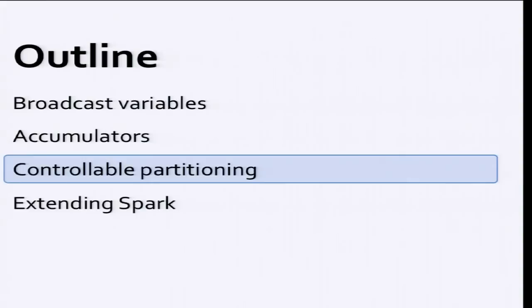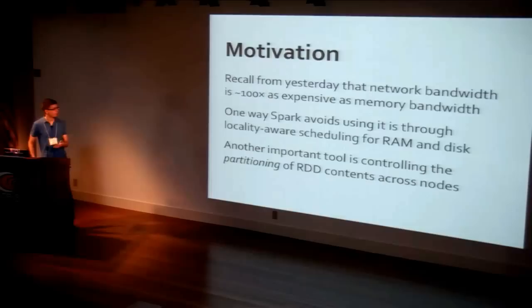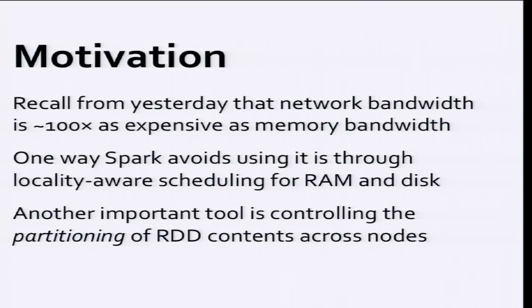So those are the shared variables. The second thing I want to talk about is data partitioning, which is also important for the same reason broadcast was — it really affects network usage. Network bandwidth is easily 100 times as expensive as memory bandwidth. In Spark we try hard to do locality-aware scheduling for data in memory and on disk, but when you have to do a shuffle like the join we showed, if the data starts on different nodes it will have to go over the network. Controlling the partitioning of RDDs is another tool to minimize data movement.